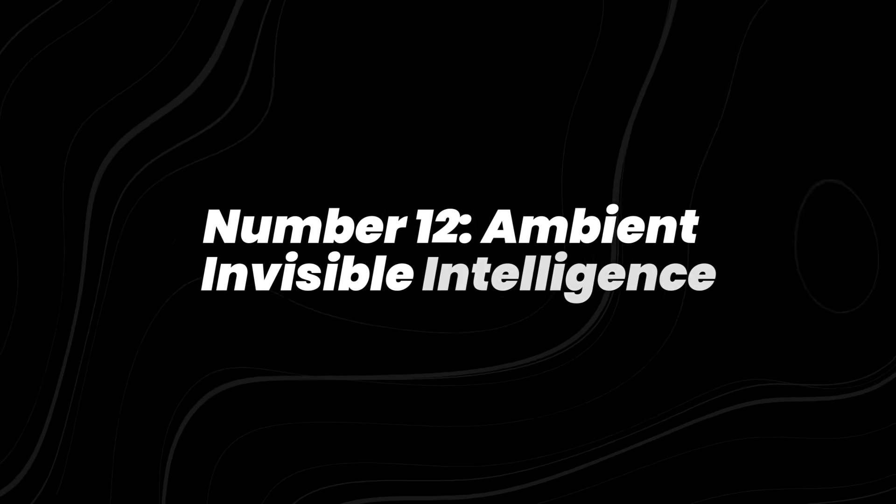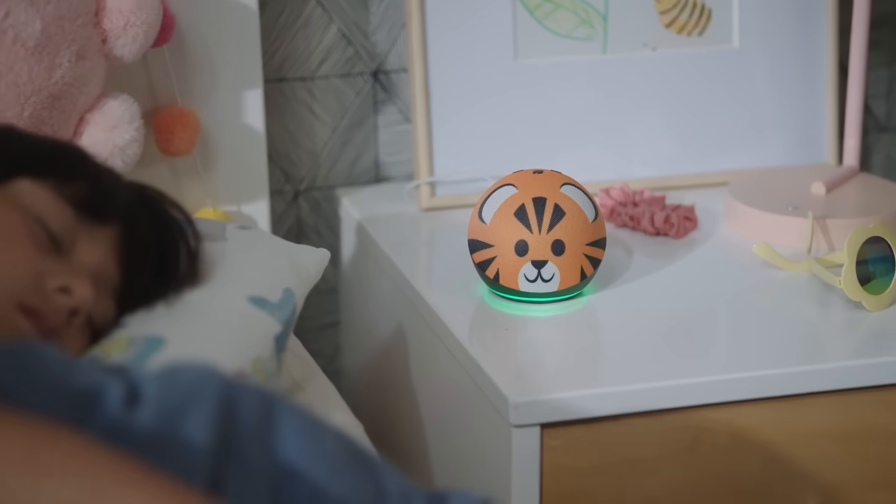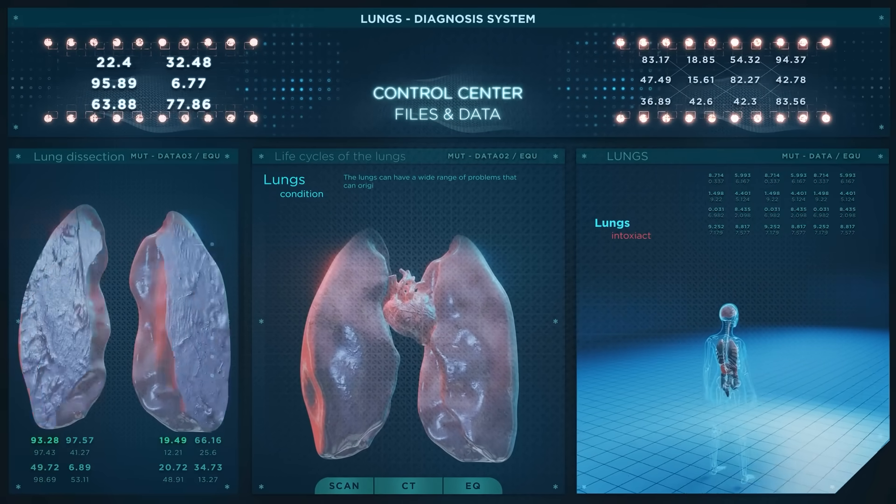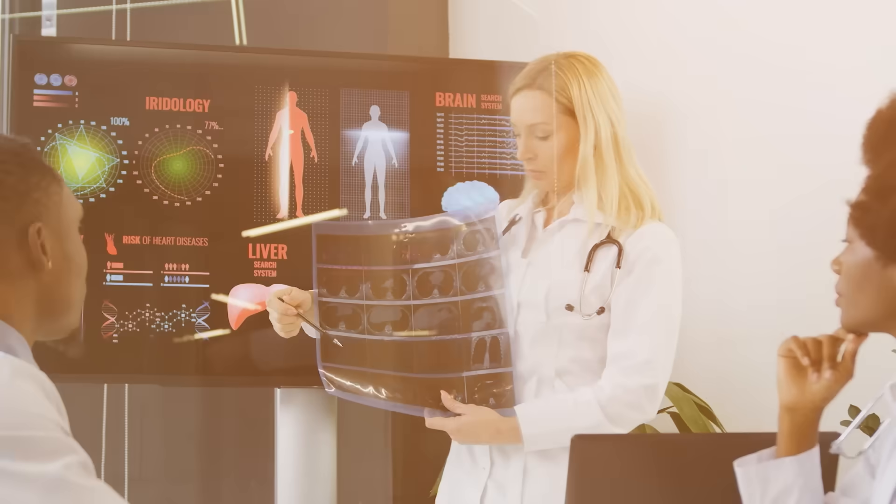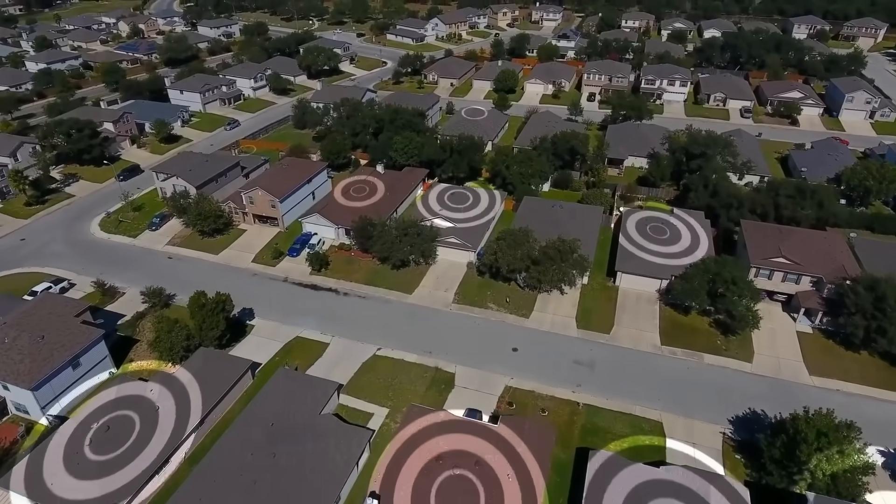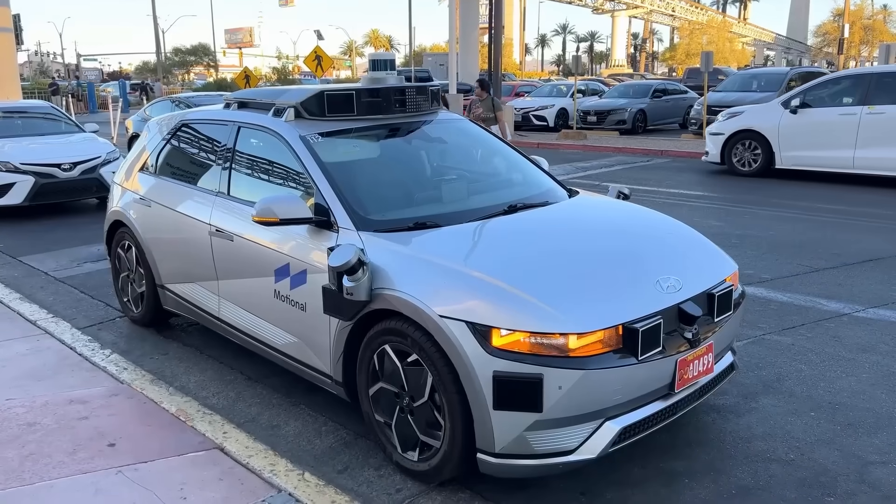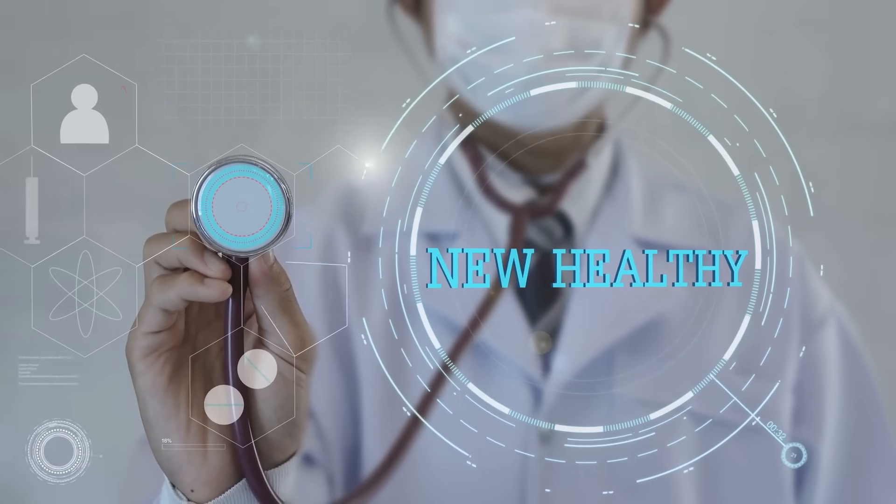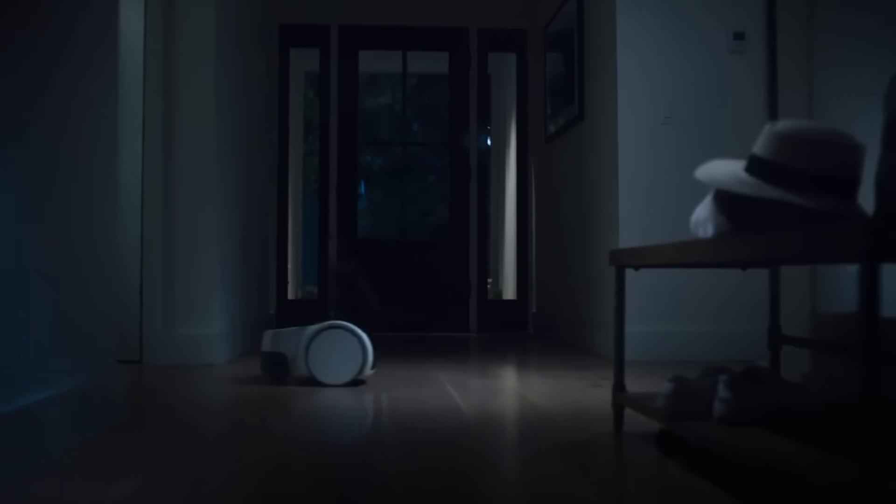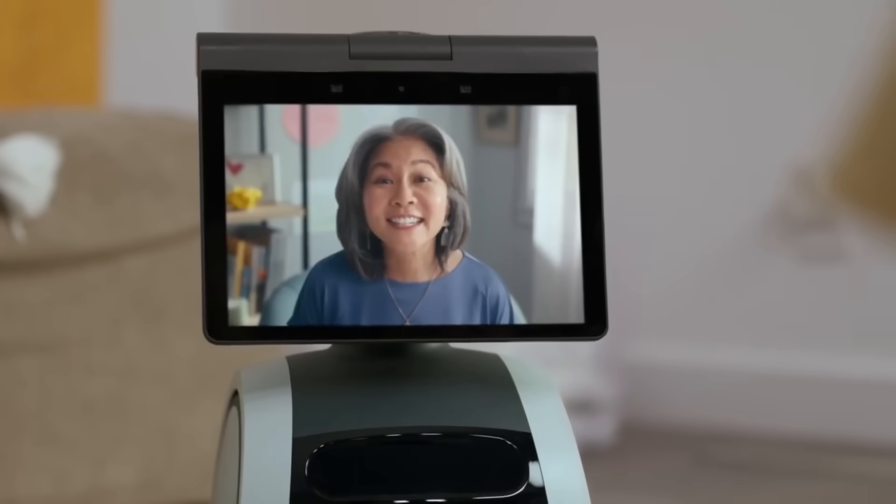Number 12, ambient invisible intelligence. AI that anticipates needs before users even recognize them. Homes equipped with predictive systems can adjust lighting and temperature automatically, while hospitals are beginning to use algorithms that detect changes in patients' vitals minutes before symptoms appear. This is ambient invisible intelligence. The global smart building market is expected to exceed $570 billion by 2030, driven by these predictive capabilities. In healthcare, early warning AI systems have reduced intensive care complications by as much as 20% in trials. The shift is clear, from reactive tools to proactive environments with AI working silently in the background.